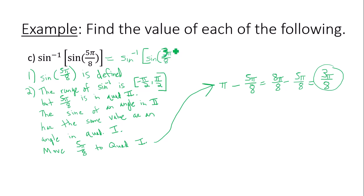Now: is sine defined at 3π/8? Yes. Is 3π/8 in the range of inverse sine? Yes. So we can cancel out the inverse sine and sine functions, and the answer is 3π/8. The trick was to take the inside angle and move it to an angle within the range of the inverse sine function.